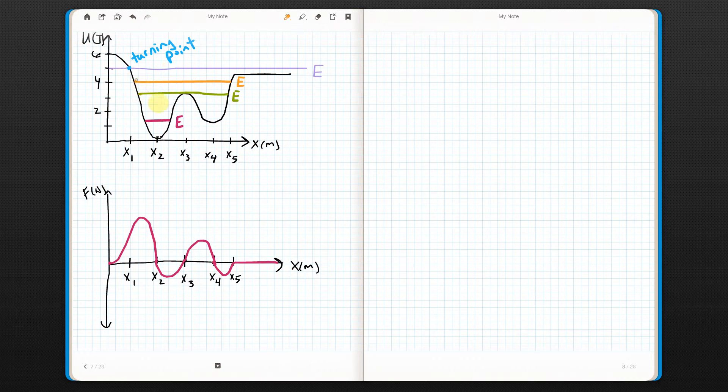So the particle, if it was moving to the left, it would move to the left until it got to here, at which point it can't move left anymore, because to do that, it would need more potential energy than the total energy it has. And the force is positive at that point, so it stops and gets pushed back the other way.